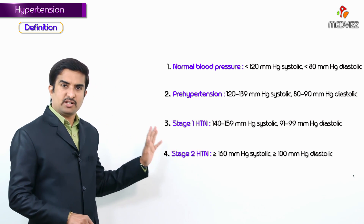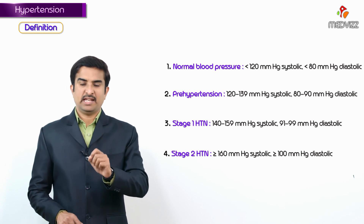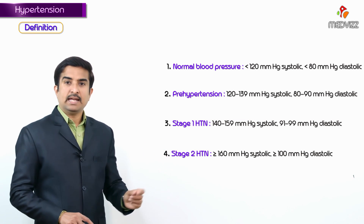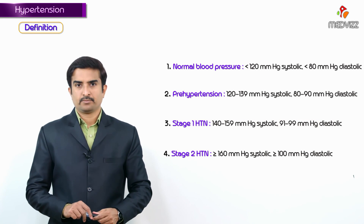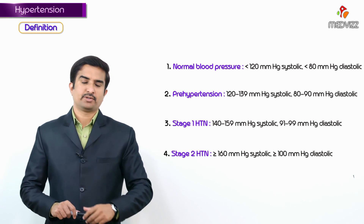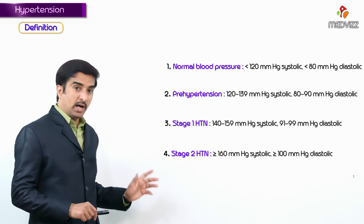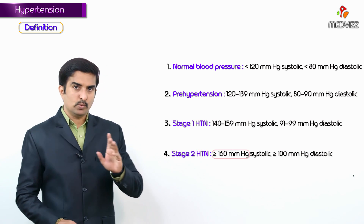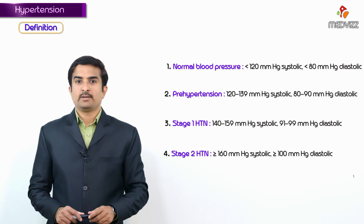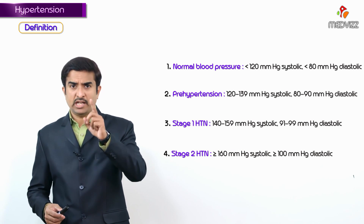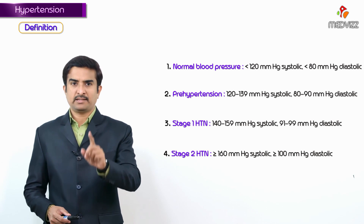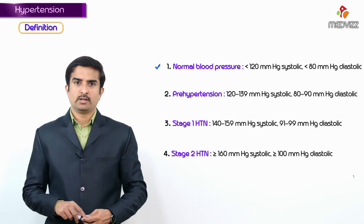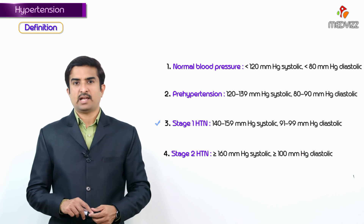Stage 1 hypertension is when the systolic blood pressure is between 140 to 159 mmHg and diastolic blood pressure is 91 to 99 mmHg. Stage 2 hypertension is when systolic BP is greater than or equal to 160 mmHg and diastolic BP is greater than or equal to 100 mmHg. This is how we classify hypertension into normal, pre-hypertension, stage 1, and stage 2.